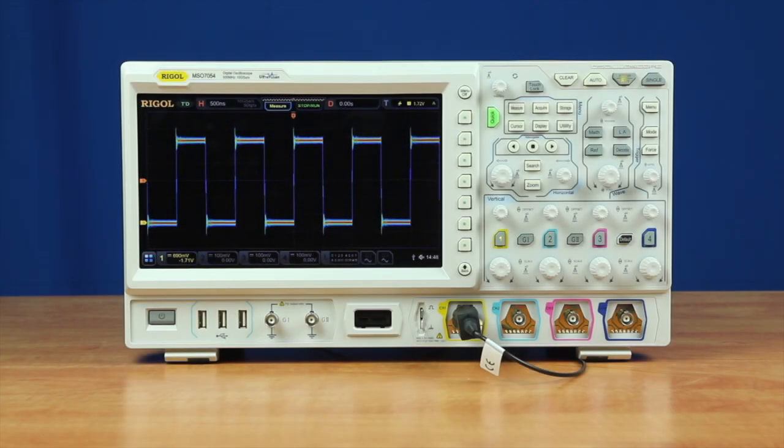Zone trigger works in conjunction with a traditional trigger type such as edge, slope, I2C, pulse or any of the other 21 trigger types.